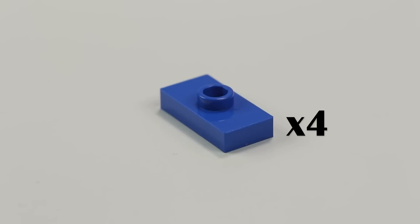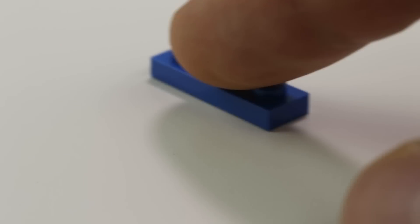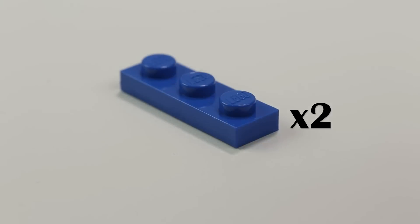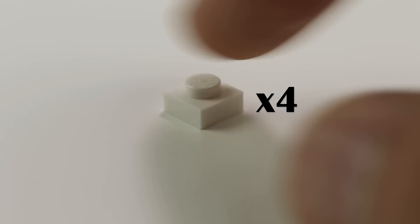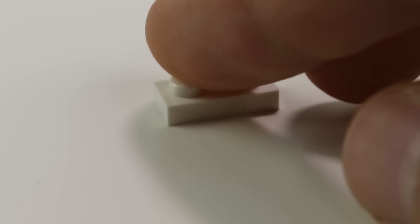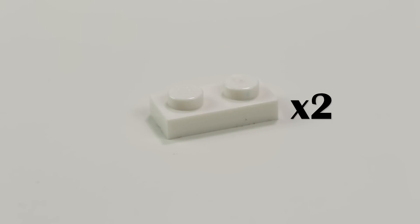Next in blue, you'll need two 1x1 plates, four 1x1 plates, and two 1x3 plates. In white, you'll need four 1x1 plates and two 1x2 plates. Finally, you'll need two 1x1 clear plates.